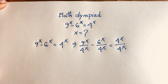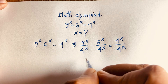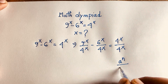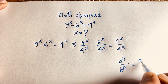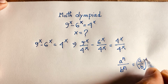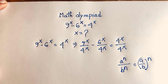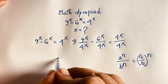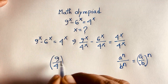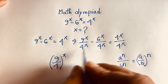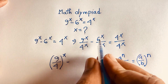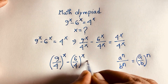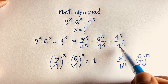You can see that here we have 9 to the power x and 4 to the power x. Using the exponential law — a to the power n over b to the power n equals (a/b) to the power n — we can rewrite 9^x / 4^x as (9/4)^x, and 6^x / 4^x as (6/4)^x, which equals 1.